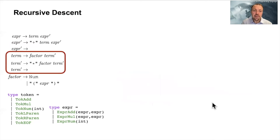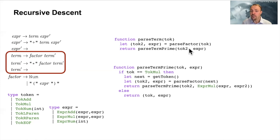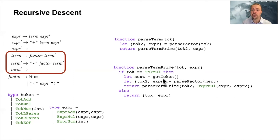For parseTerm it is exactly the same structure — you can look at this code and see it mirrors expression and ExpressionPrime exactly, except that in the end it calls parseFactor instead of parseTerm. There is nothing new here; it is a pretty repetitive task, which is why we also have parser generators.